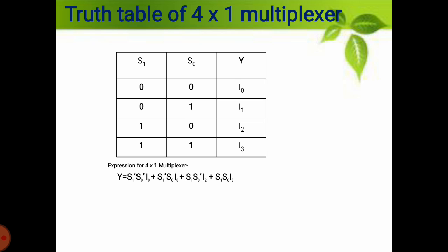Come to the third row. If the selection line S1 is 1 and S0 is 0 — that is 10 — then the output is i2, because the binary value of 2 is 10. And when the selection line is 11, the output is i3.